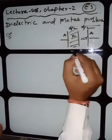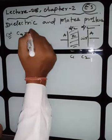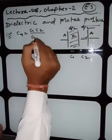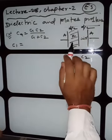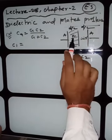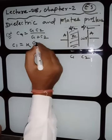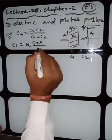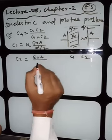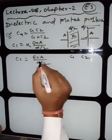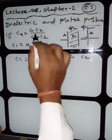Suppose this is C1 and this is C2, and both are in series. So C equivalent = C1×C2/(C1+C2). C1 = K×ε₀A/D where the separation is d/2 (since the dielectric fills d/2), so C1 = 2Kε₀A/D. C2 (air, K=1) = ε₀A/(d/2) = 2ε₀A/D. You can put this value in the formula to find the answer.